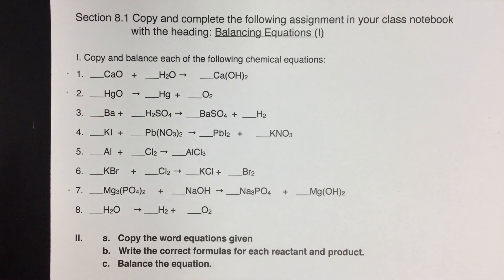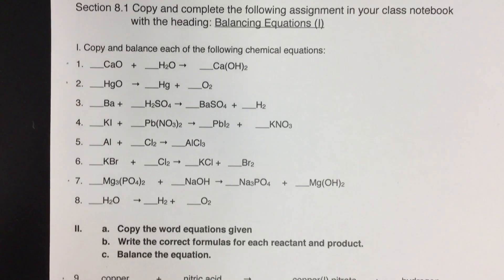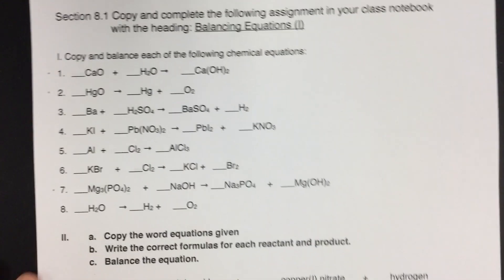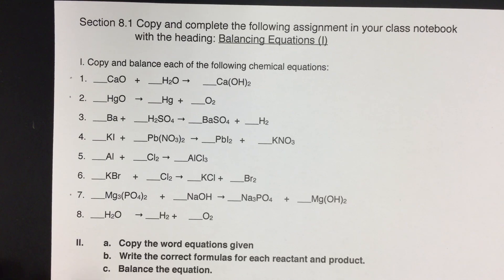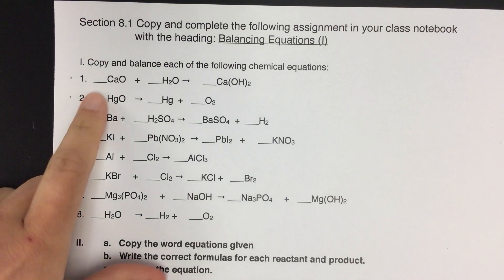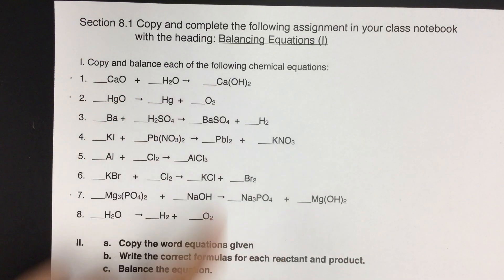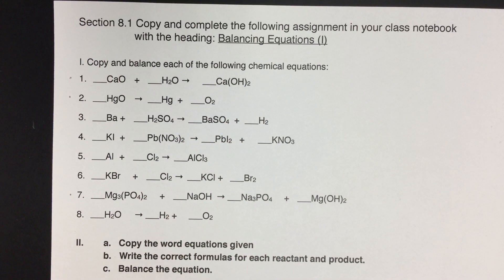So I'm going to do 3 from the first section of this assignment, and then 3 from the second section of the assignment, starting with number 1. So this one, in part 1 we're just trying to balance the chemical equations by adding the coefficients in front of each of these substances to make sure that they're balanced.